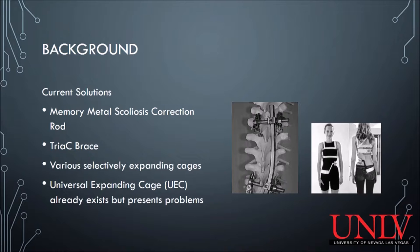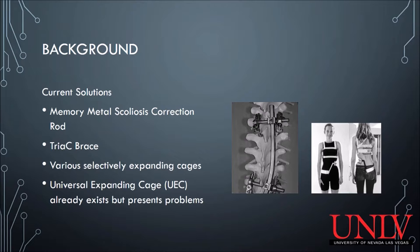The second picture is the Tri-AC brace. This brace is used in mild forms of scoliosis but is quite bulky and not inconspicuous, presenting problems when having to fit the brace every day. There are also various selectively expanding cages on the market that only expand upward, so they are not as flexible as the UEC. A version of the UEC currently exists but presents problems such as the inability to adjust the device without additional surgery.